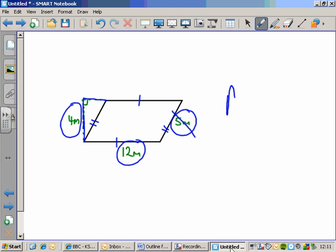And that's the true height of this shape. So the area of this particular parallelogram is going to be found by doing base times the perpendicular height. And the base is twelve and the height is four, twelve, four is forty-eight, forty-eight metres squared.